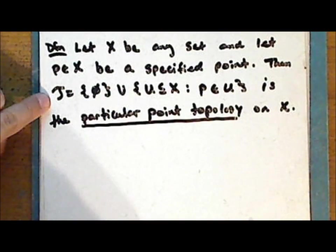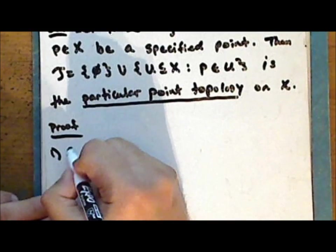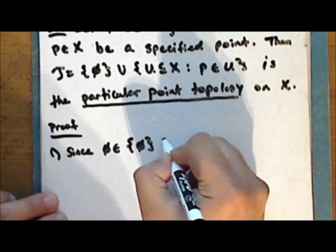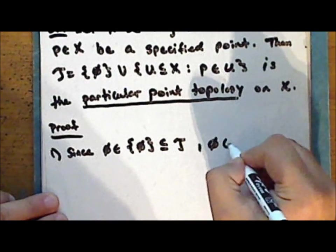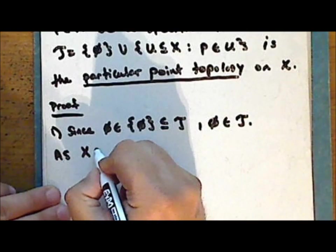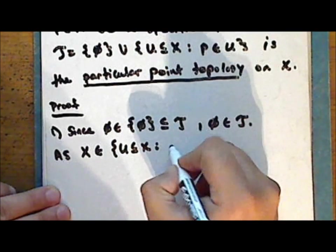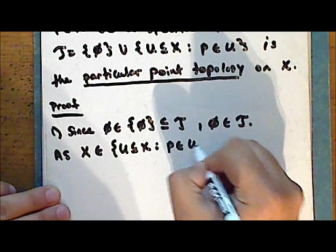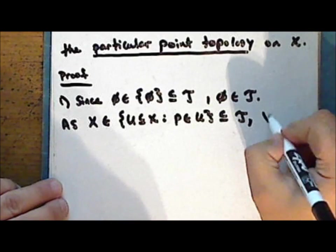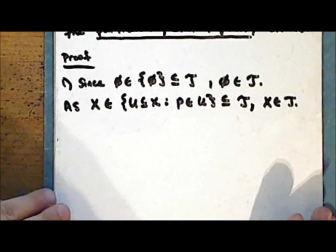Once again, we need to show that this collection tau is a topology. Since the empty set is in the set which contains the empty set, which is a subset of the collection tau, the empty set is in the collection tau. And as the entire set is a subset of itself that contains the point P, we have that the entire set is in the collection tau. So the first condition is satisfied: both the entire set and the empty set are in the collection.